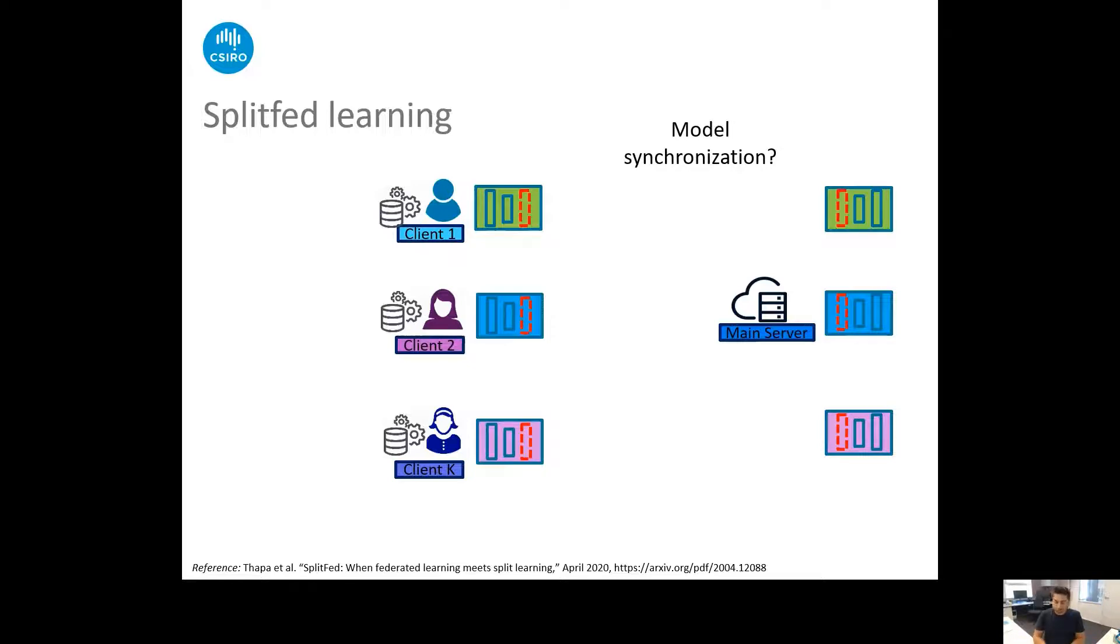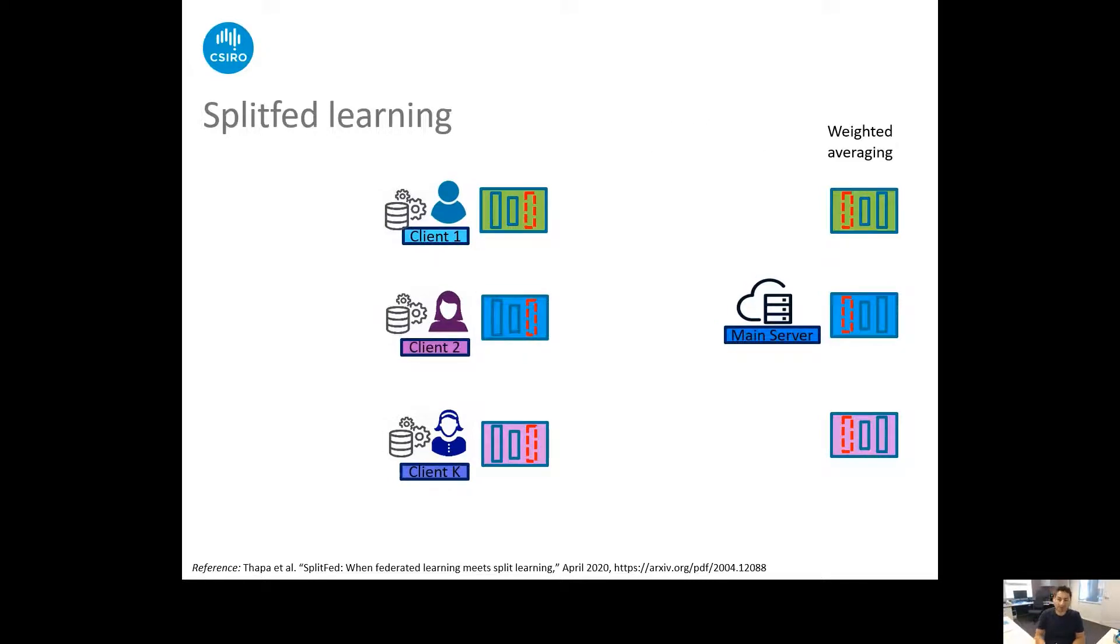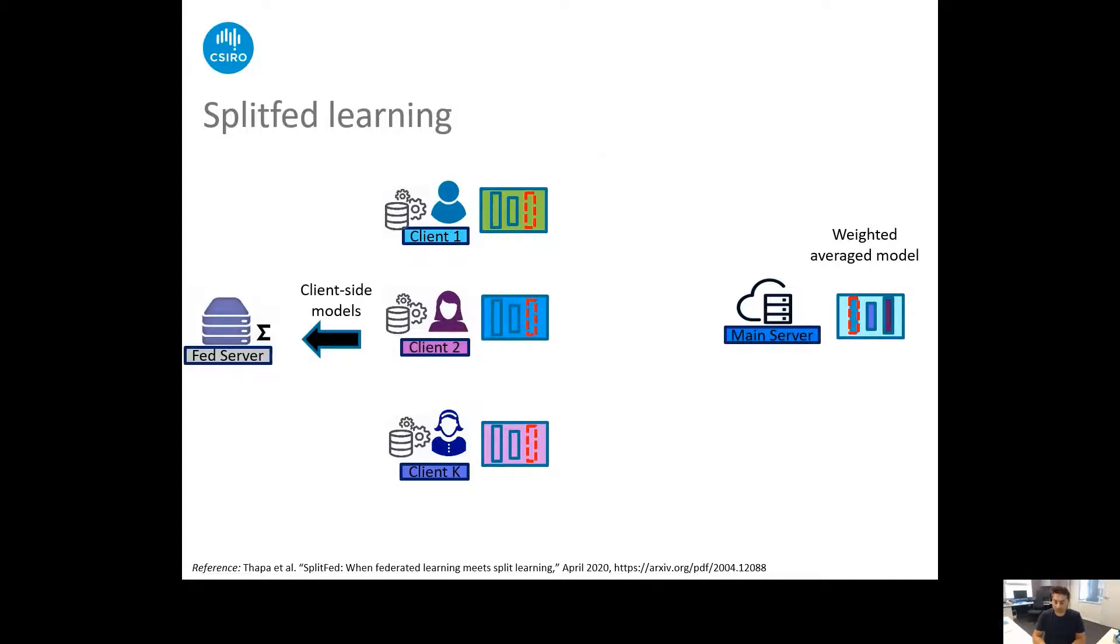Now how to maintain the model synchronization? So we can start from the server side, motivated from weighted averaging, we perform the weighted averaging and make the server side global model. But now how about the client side? So we introduce a FED server which is responsible for the client-side model averaging. That is again the weighted averaging. So clients send models or model gradients and FED server sends back the global model or global gradients.